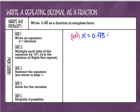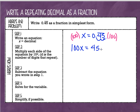So I'm going to multiply the left side by 100, and I'm going to multiply the right side by 100. When I do that, I'm going to get 100x on the left side, and if I were to multiply 0.45 repeating by 100, that means I'm going to be moving this decimal point over two places to the right. So it's going to become 45.45 again, because that's repeating.